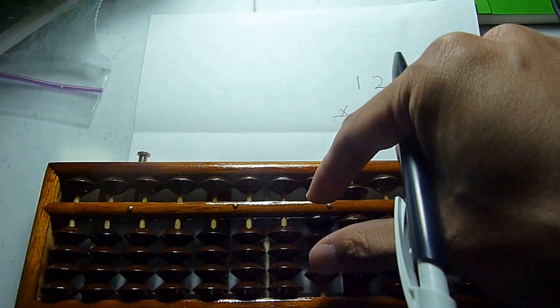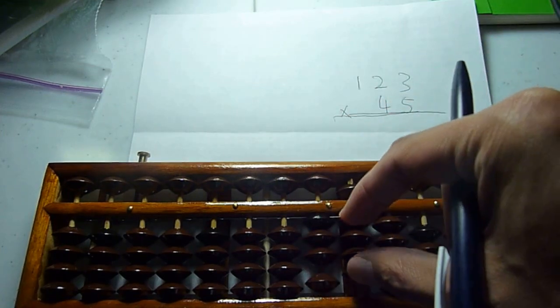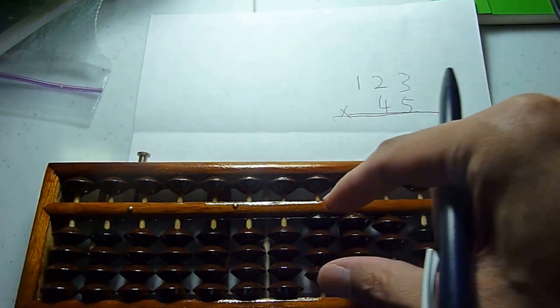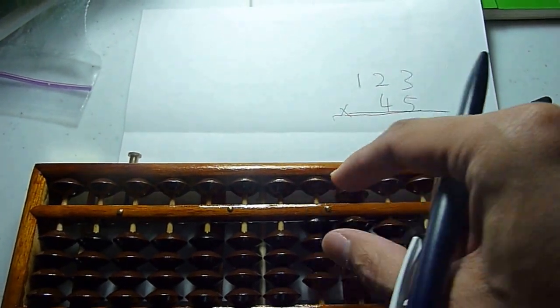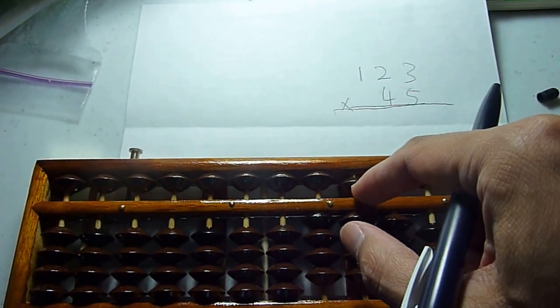One, two, three, four. Here. One multiplied by five is zero, five. So zero, five.